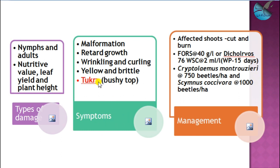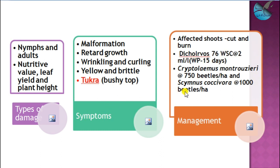When we see the symptoms, the leaf will appear malformed, retarded growth will be seen, and wrinkling and curling of the leaf will be observed. This leads to the yellowness and brittleness of the leaf, commonly called tukra disease or bunchy top disease. Due to the sucking of the leaves, they form a bunchy appearance, which is called the tukra disease.